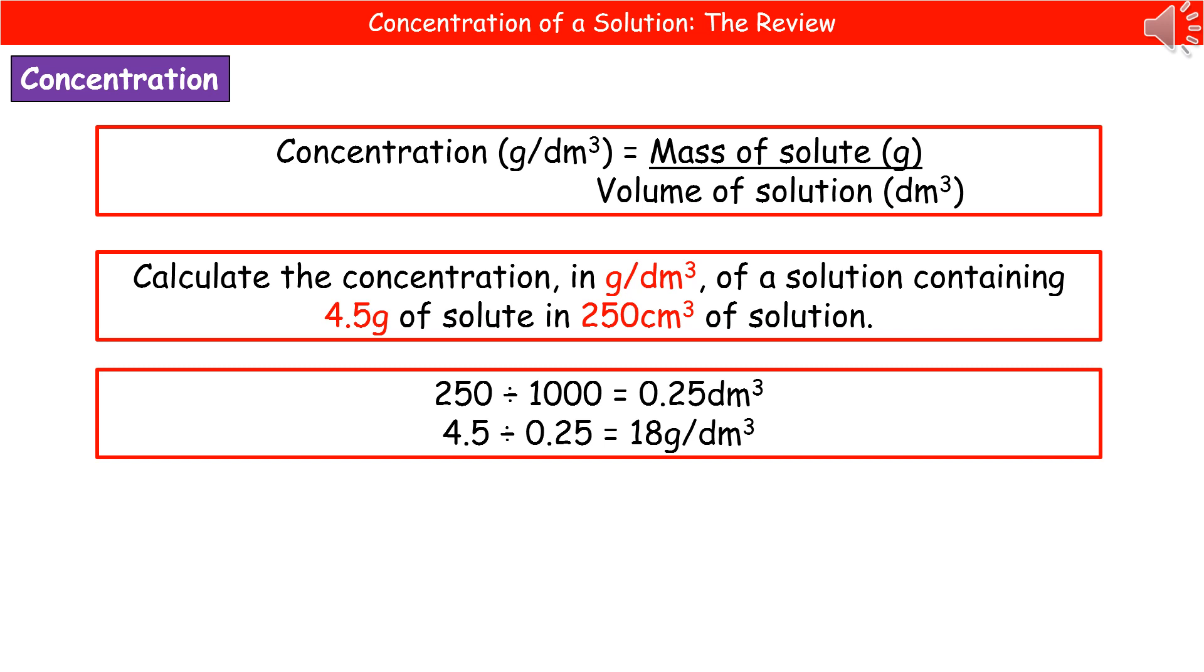First thing to do is get your highlighter or circle or whatever it is you do to make bits stand out to remind you of the important points from a question. So the important parts here are that we're calculating in grams per decimeter cubed, we've got 4.5 grams and 250 centimeters cubed. So as soon as we see that centimeters cubed, hopefully our brain is kicking in and saying, well, we've got decimeters cubed in our concentration, but centimeters cubed is our volume. We've got to convert. So 250 divided by 1000 gives us 0.25 decimeters cubed as the volume.